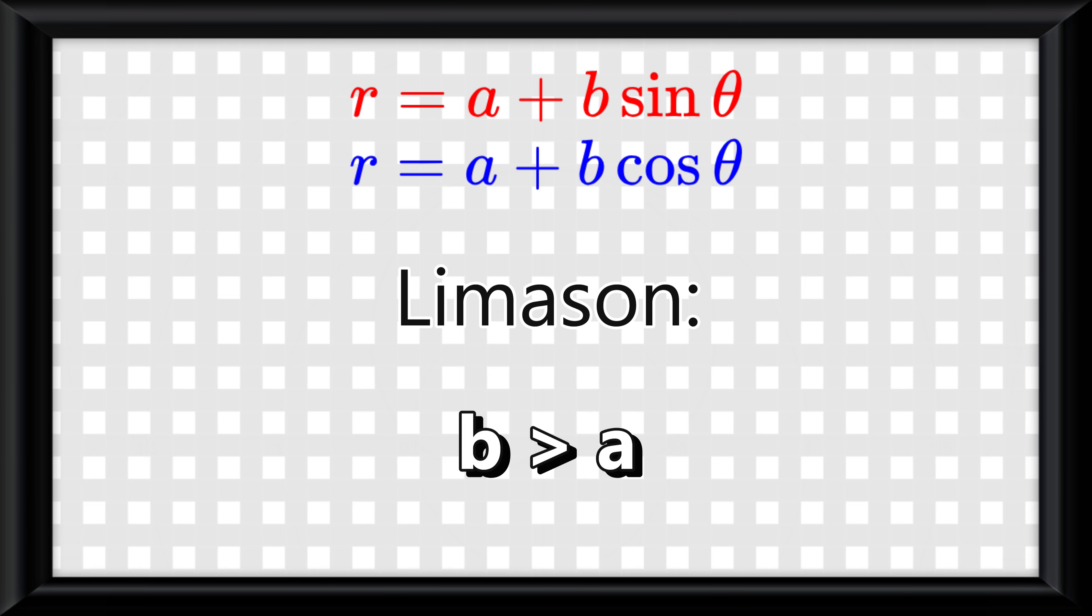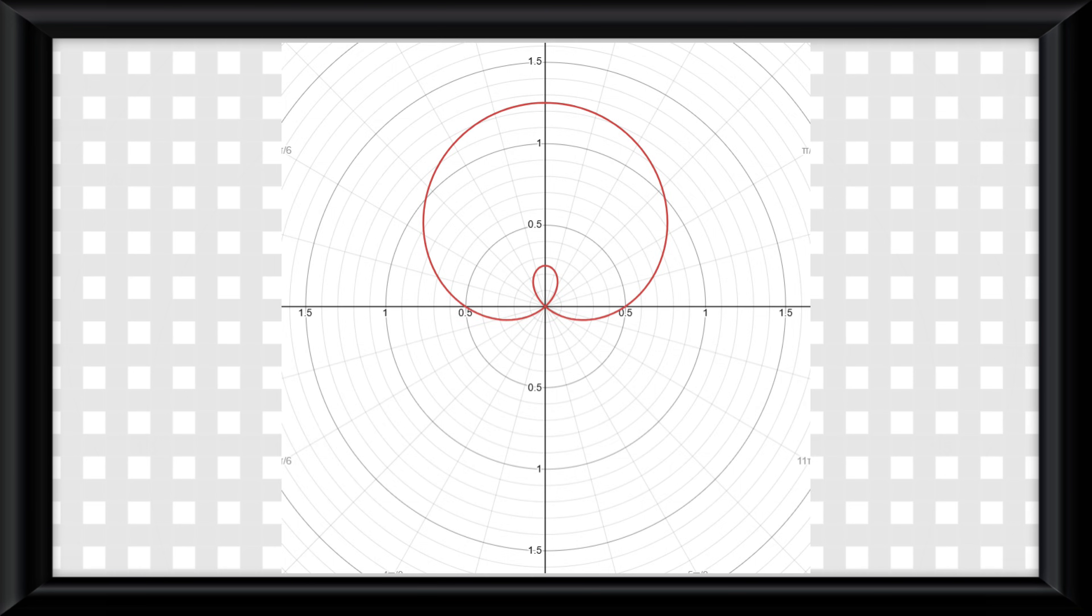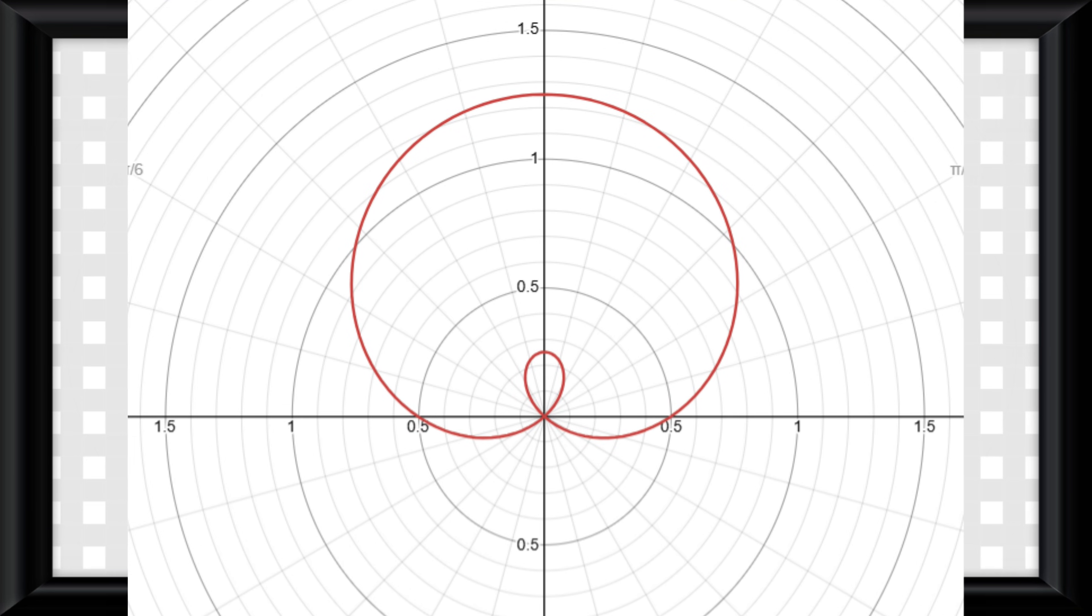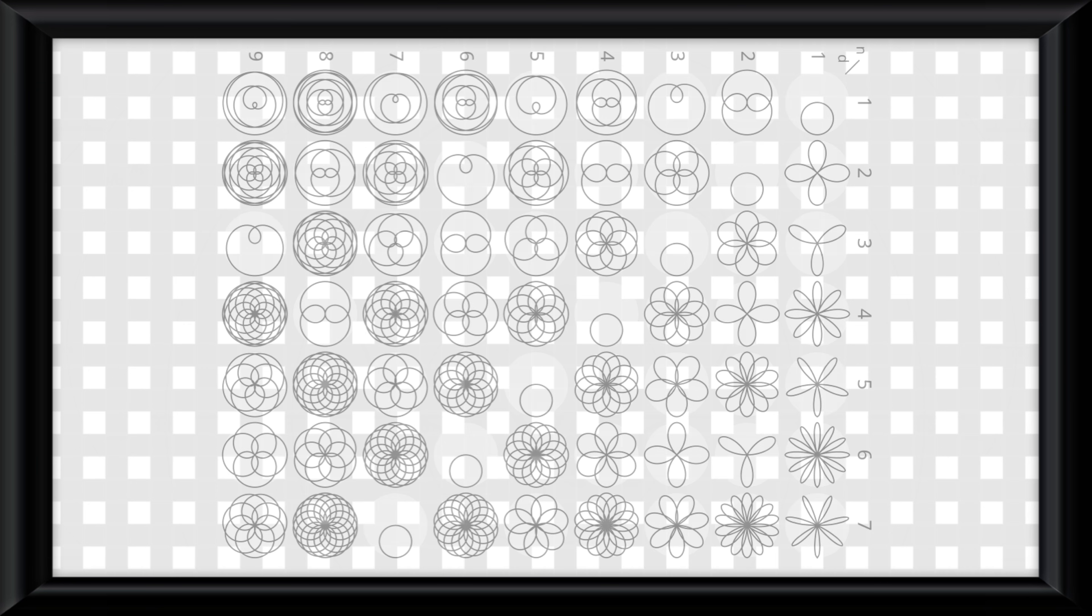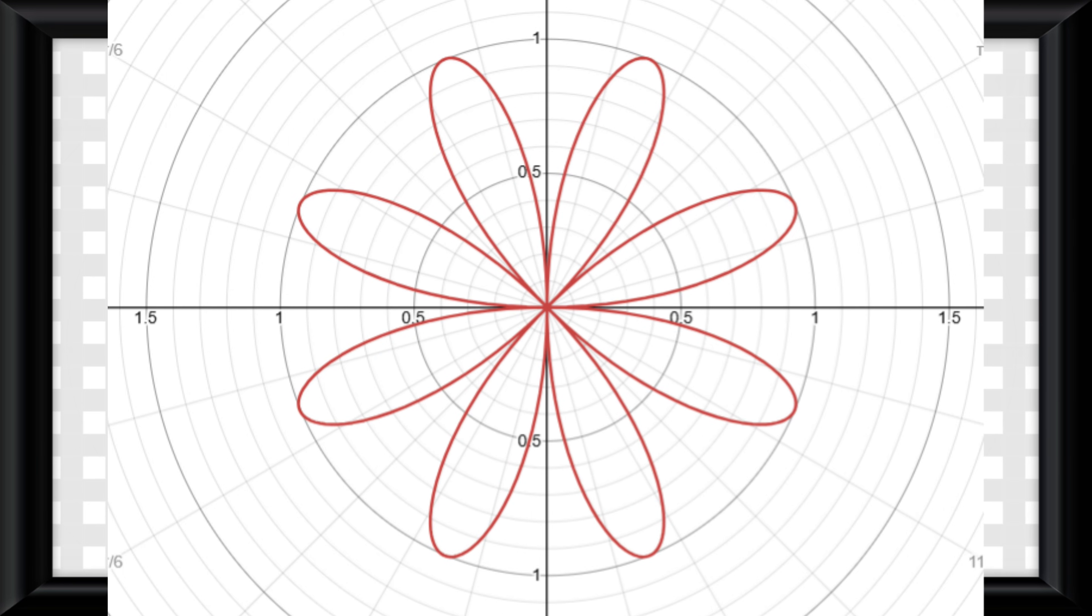A limaçon happens when b is greater than a. It looks like this on a graph, so kind of like a heart shape but with a loop. And finally a rose happens when you have something multiplying by theta. It can look like a lot of things, but this is kind of generally what it looks like.